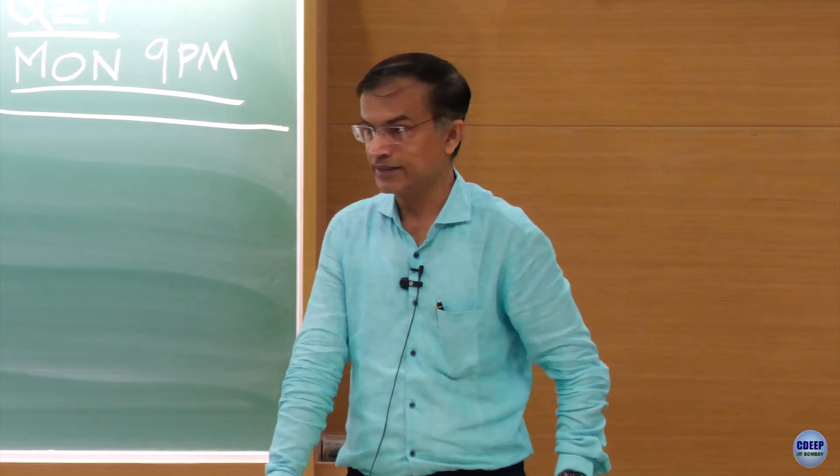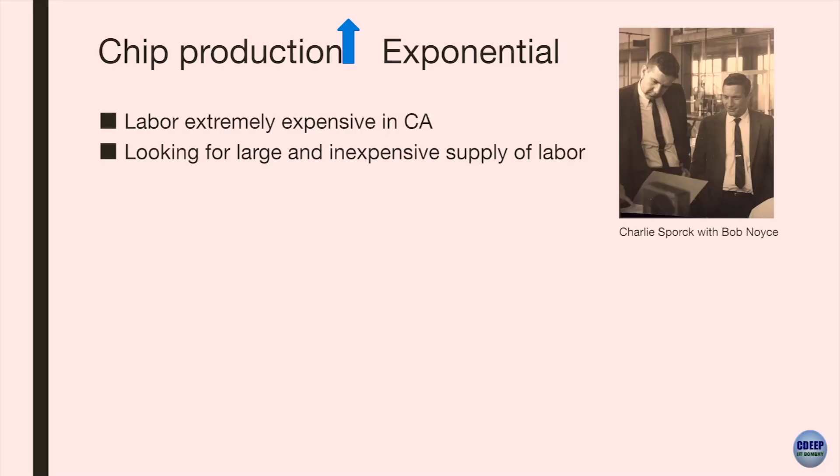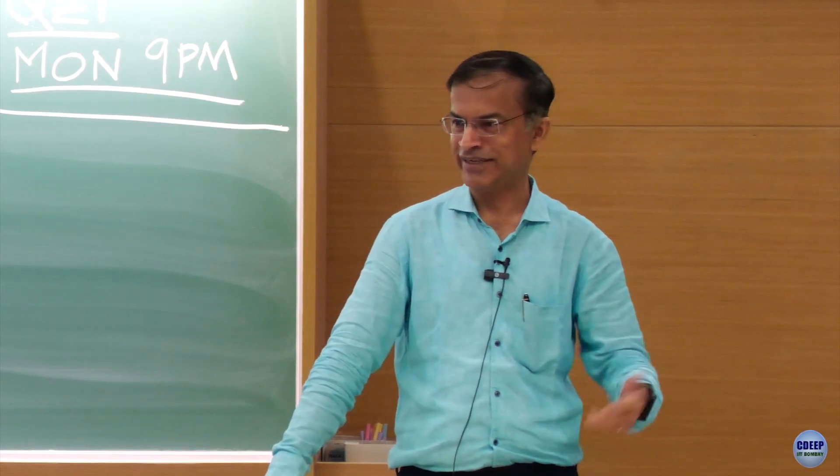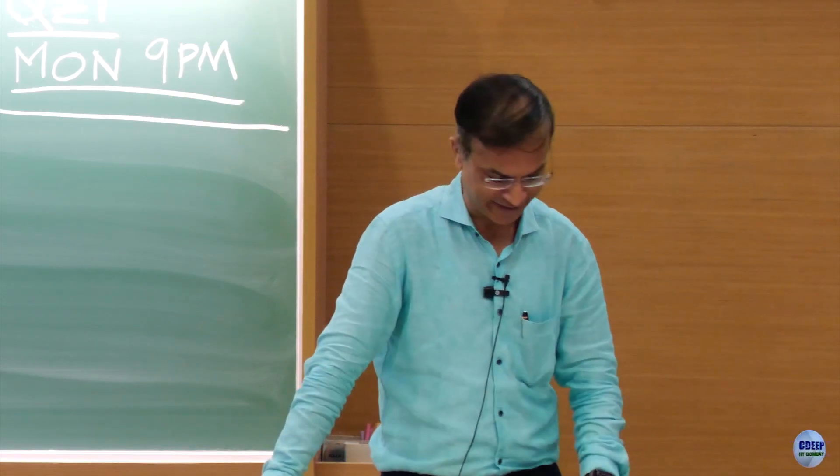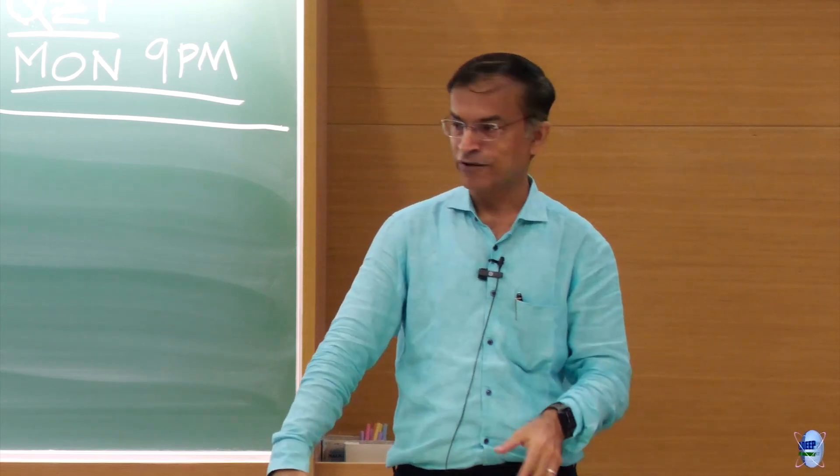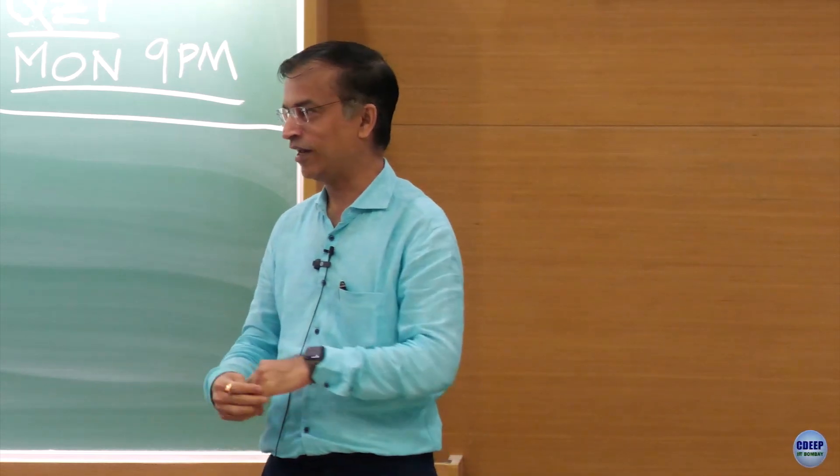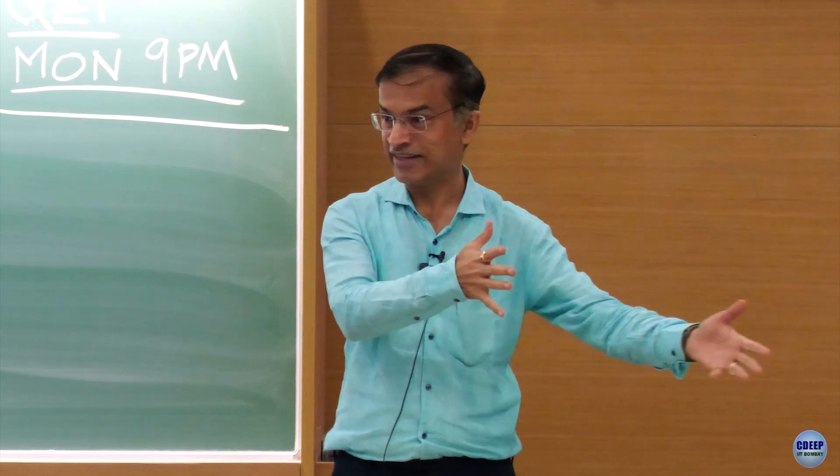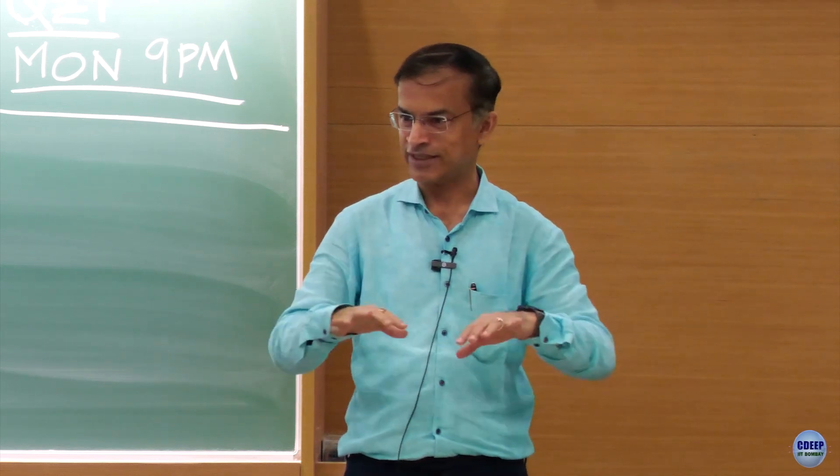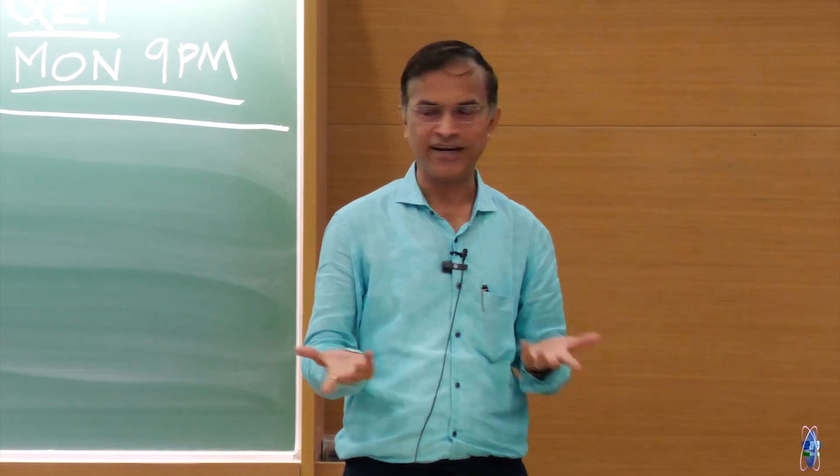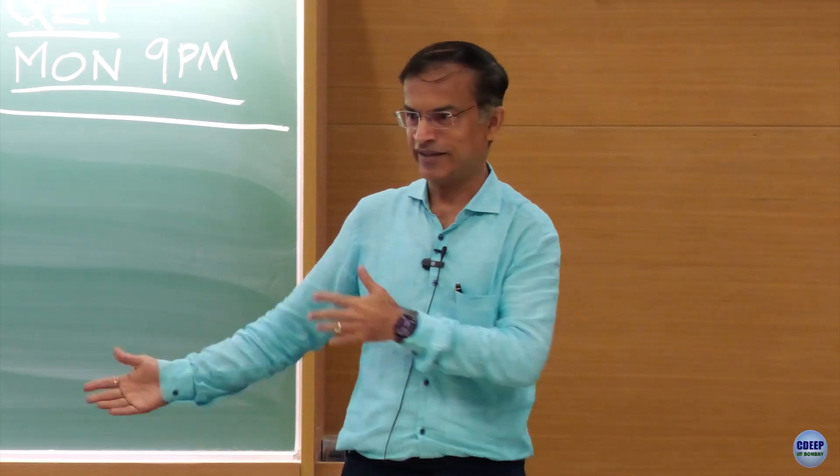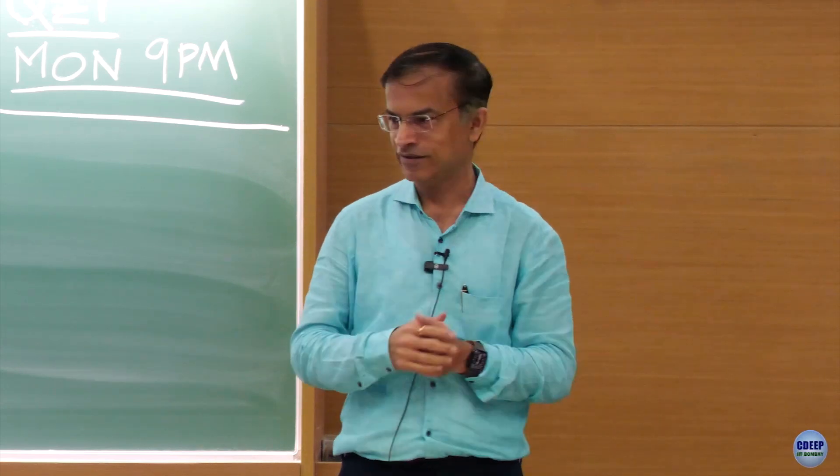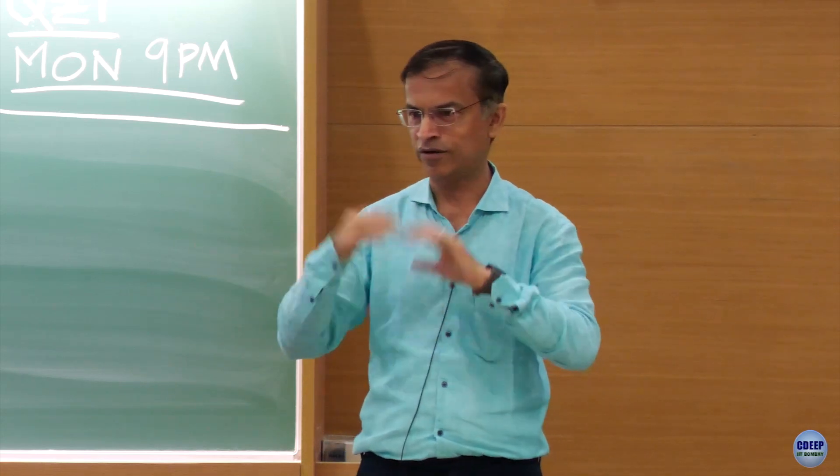So labor was extremely expensive in California and he was looking for a pool of labor. This is a very interesting story that even I didn't know when I was digging through the history. So he was looking for a large supply of labor to do all this stuff. And then he found out that women, they have smaller hands by definition. So he said, why not women, let have women do this business. So then they had factories with lots of women doing this very intricate work of wire bonding and all those things.